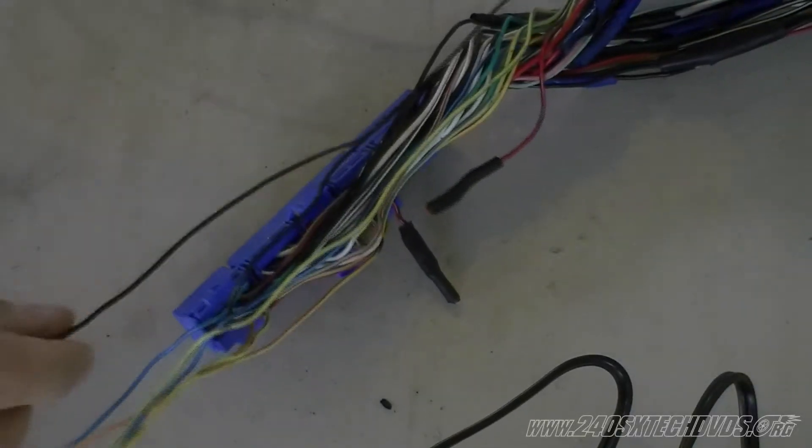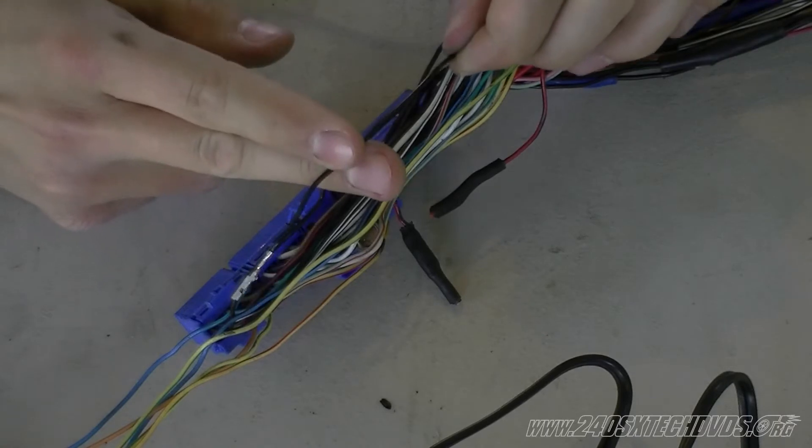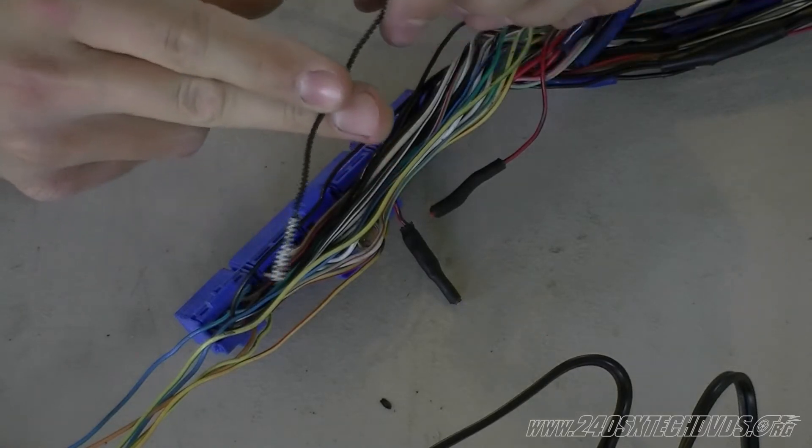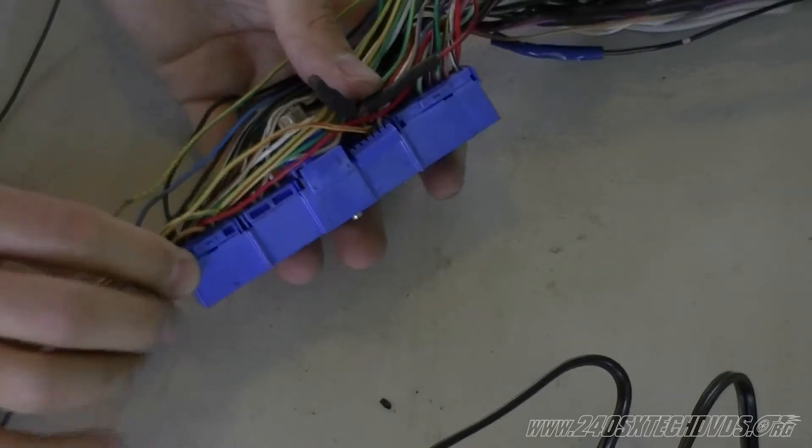Okay, we have the black wire that came off of the dash connector here. We're going to cut it off and connect it to another black wire on the ECU harness here, on the ECU connector, which I have picked out.